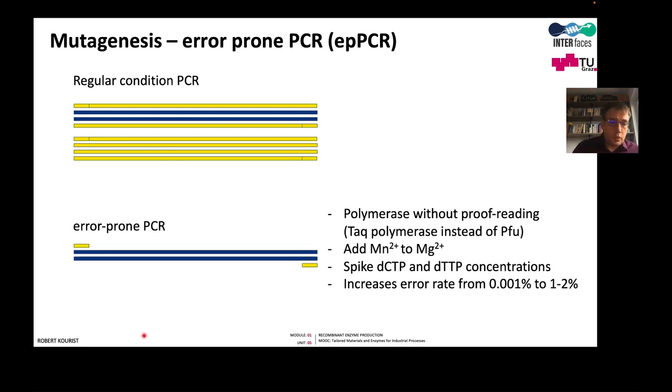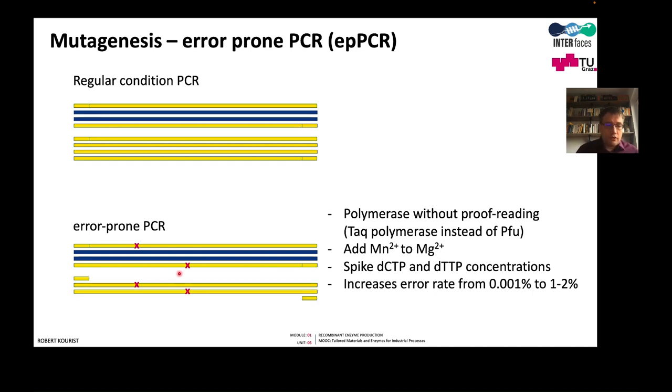In error-prone PCR, we would still have our template and primers bind. The amplification causes errors, which I have denoted with these red crosses. These errors would be then again in the next cycle as a template. The polymerase, if it amplifies, conserves these mistakes but also introduces new errors in every cycle. With the number of cycles and the conditions, we can adjust the mutation frequency. This is a widely used method. It has some limitations, and usually it is done for the generation of very large libraries between 50,000 and typically 100,000 clones.